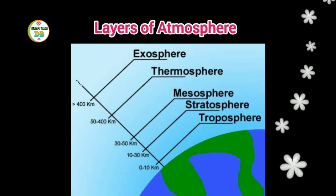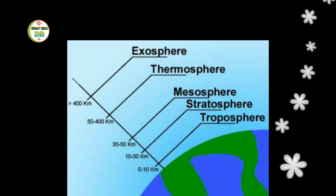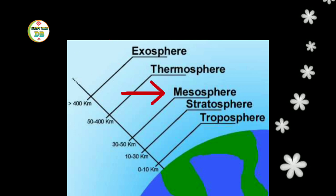The atmosphere has five distinct layers that are determined by the changes in temperature that happen with increasing altitude. Earth's atmosphere is divided into five different layers: Exosphere, Thermosphere, Mesosphere, Stratosphere, and Troposphere.